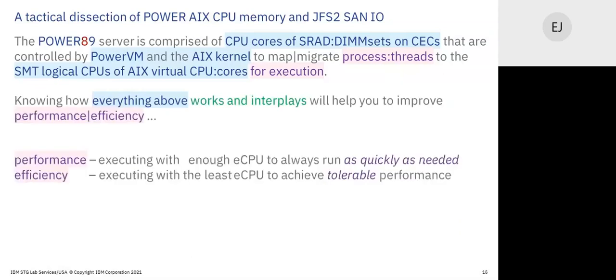Performance efficiency is a continuum — a spectrum. I define it as performance at enough entitlement versus efficiency at the least entitlement, with numbers associated with the definition. That's what tuning is: understanding numbers and making decisions. Most of us in the Power verse tune by best practices. But best practices is not tuning — best practices is a first good guess. Tuning is watching the workload and making decisions.